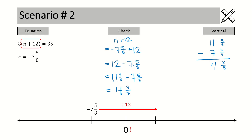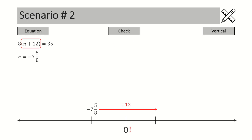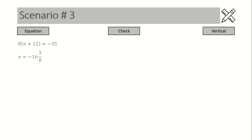In scenario number two, you want your larger number term out front. And if your leading term doesn't have a fraction, you're going to have to borrow one from that whole number and create a fraction in the same denominator as what you are working with. That's why this one is a little bit trickier.